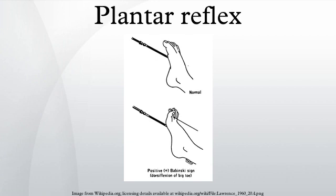The Babinski sign can indicate upper motor neuron lesion constituting damage to the corticospinal tract. Occasionally, a pathological plantar reflex is the first and only indication of a serious disease process, and a clearly abnormal plantar reflex often prompts detailed neurological investigations, including CT scanning of the brain or MRI of the spine, as well as lumbar puncture for the study of cerebrospinal fluid.